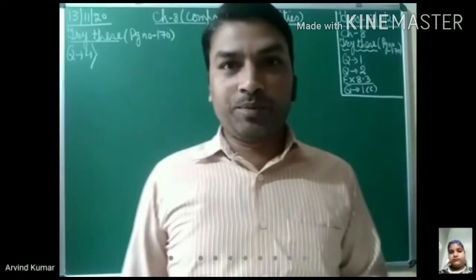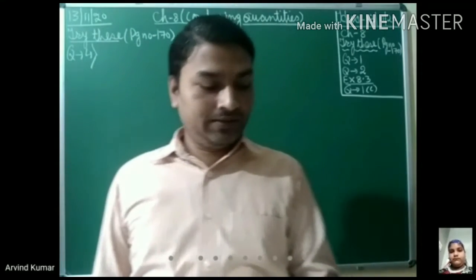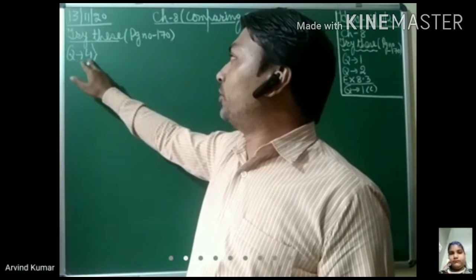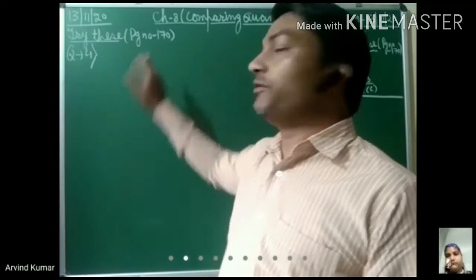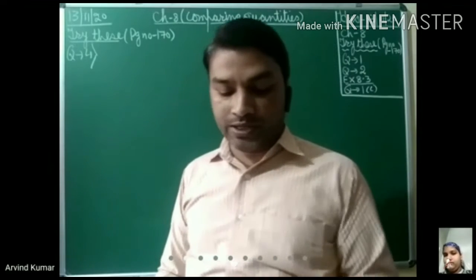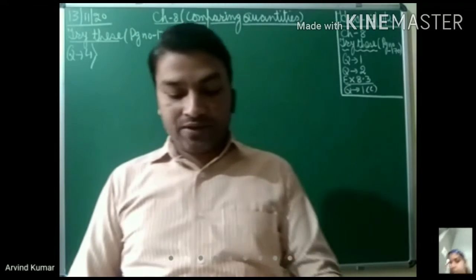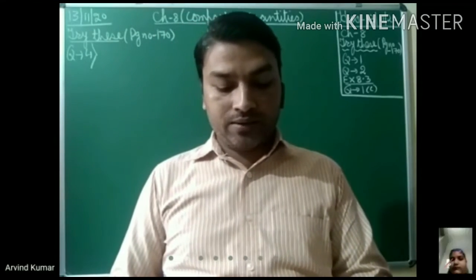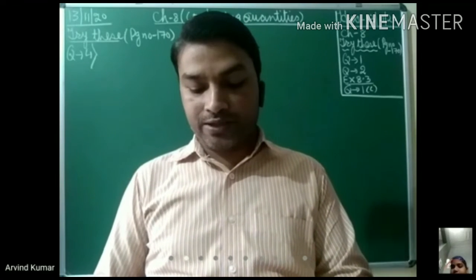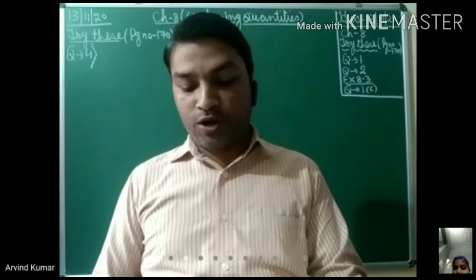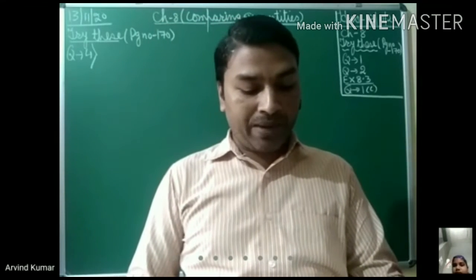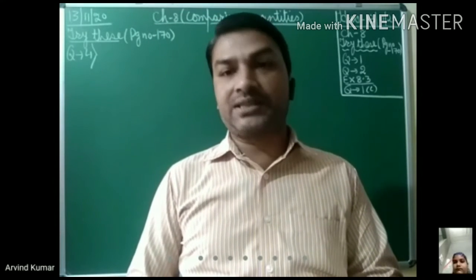Good morning everyone. Today we will do question number 4, Try These, page number 170. The question is: rupees 7,000 is borrowed at 3.5% rate of interest per annum, borrowed for 2 years. Find the amount to be paid at the end of the second year.